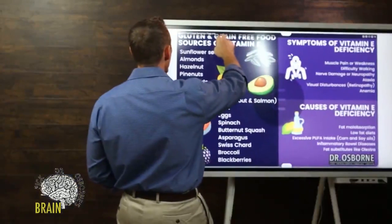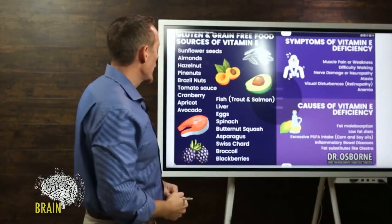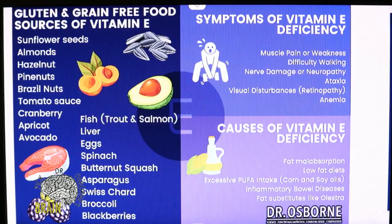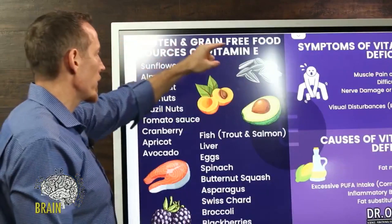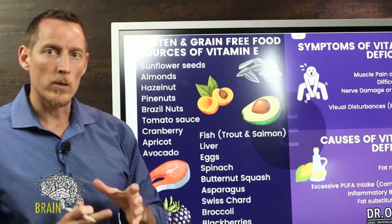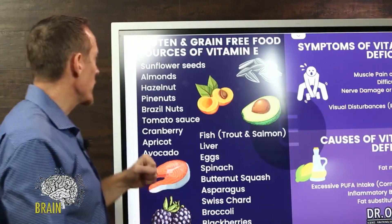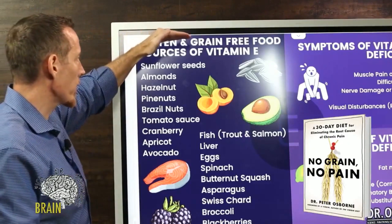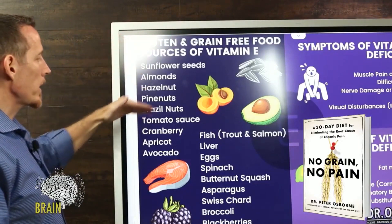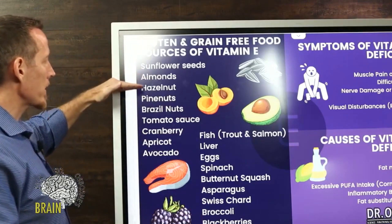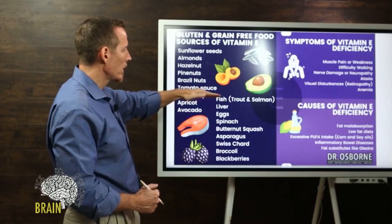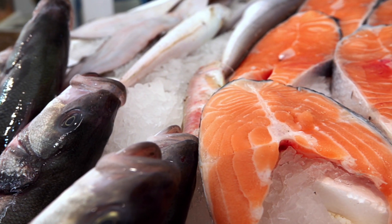Now if you're trying to get more vitamin E in your diet, let's talk about some foods you want to gravitate toward. These are gluten and grain-free sources of vitamin E, listed in order from greatest to least quantity: sunflower seeds, almonds, hazelnuts, pine nuts, brazil nuts, tomato sauce, cranberry, apricot, and avocado.